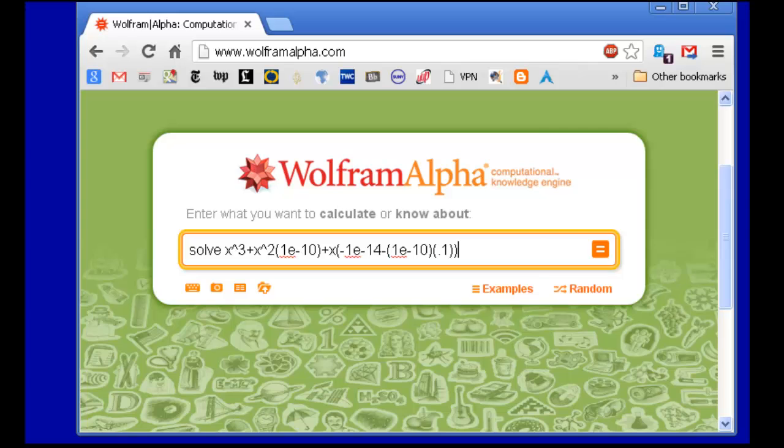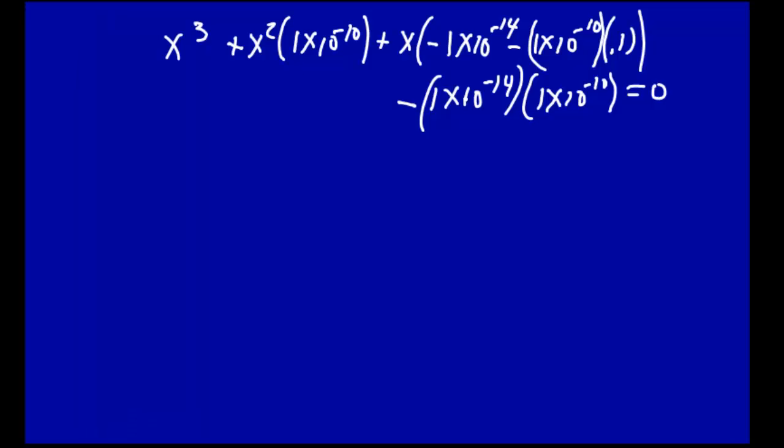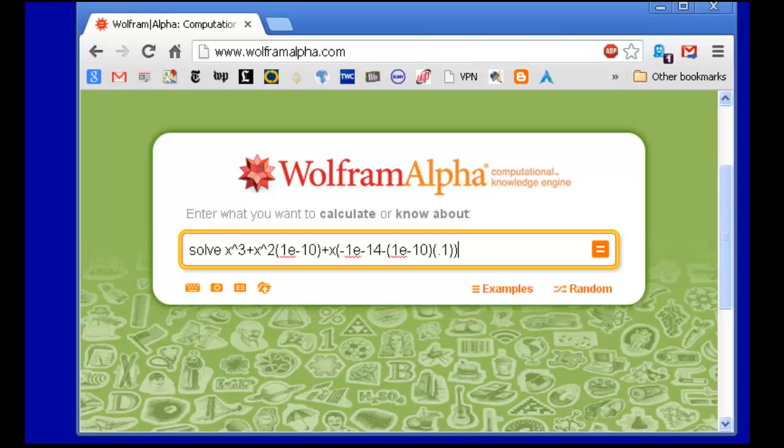And then we have this term here. I do this in my head. 10⁻²⁴. Minus 1e-24. Okay. Wolfram Alpha, solve this equation. We're going to solve for x. Press return.